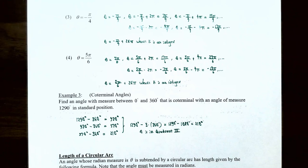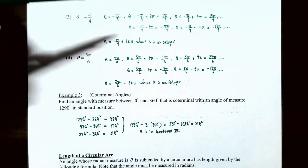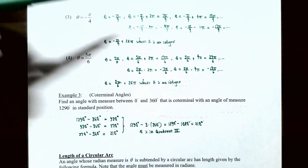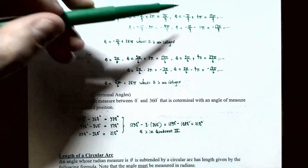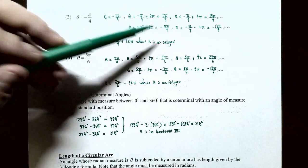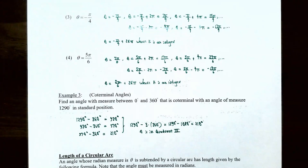Number three: theta is negative pi divided by 4 radians. Adding one revolution of 2 pi gives negative pi over 4 plus 8 pi over 4 equals 7 pi over 4 — coterminal. Adding two revolutions gives negative pi over 4 plus 4 pi equals 15 pi over 4 — also coterminal. Subtracting one revolution gives negative 9 pi over 4, and subtracting two revolutions gives negative 17 pi over 4 — both coterminal with negative pi over 4.